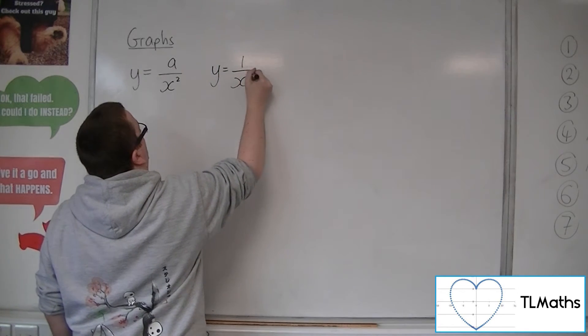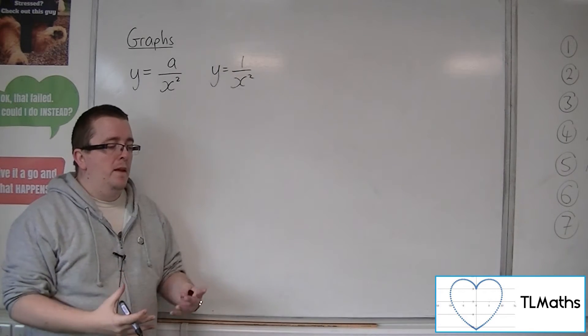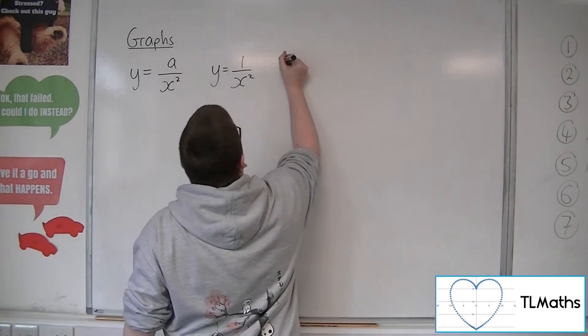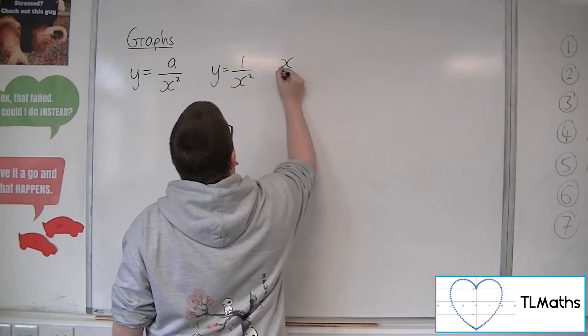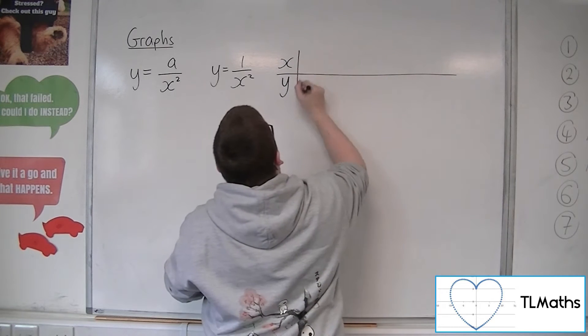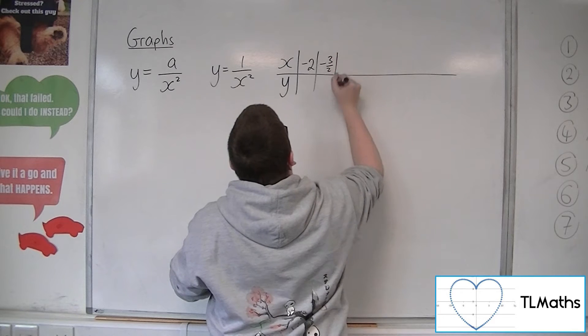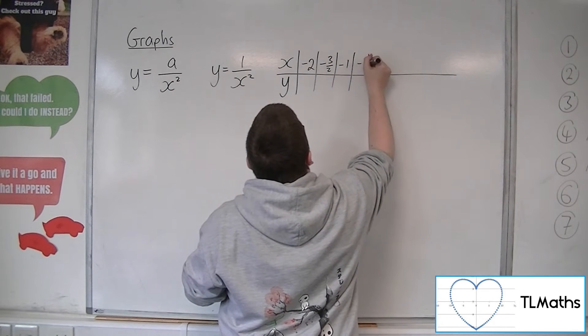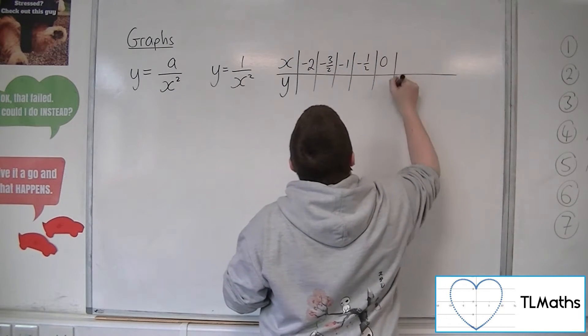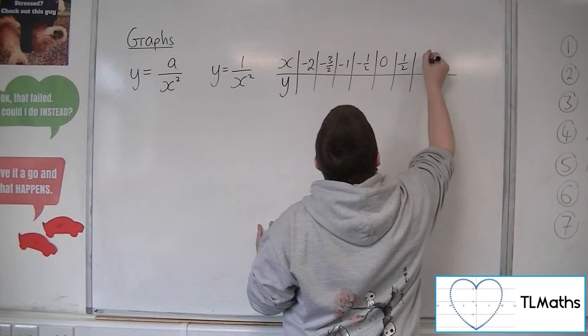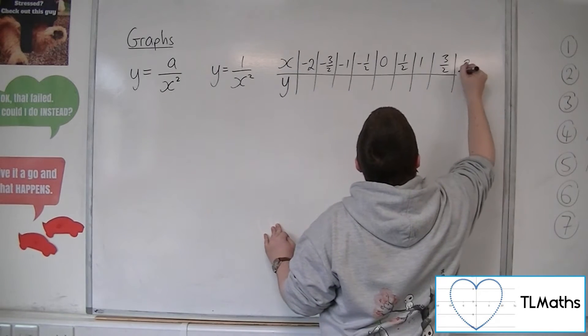Using a similar approach to last time, we'll plot the points by building up a table of values. Starting with x = -2, then -3/2, -1, -1/2, 0, 1/2, 1, 3/2, and 2.